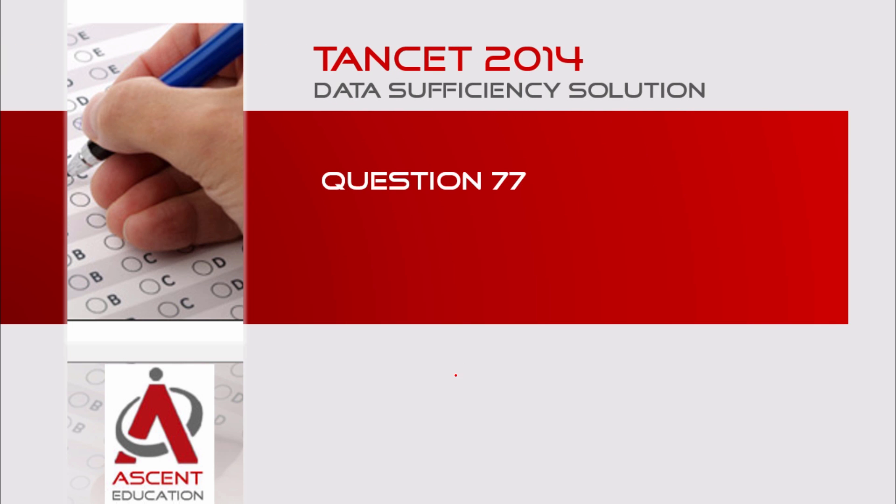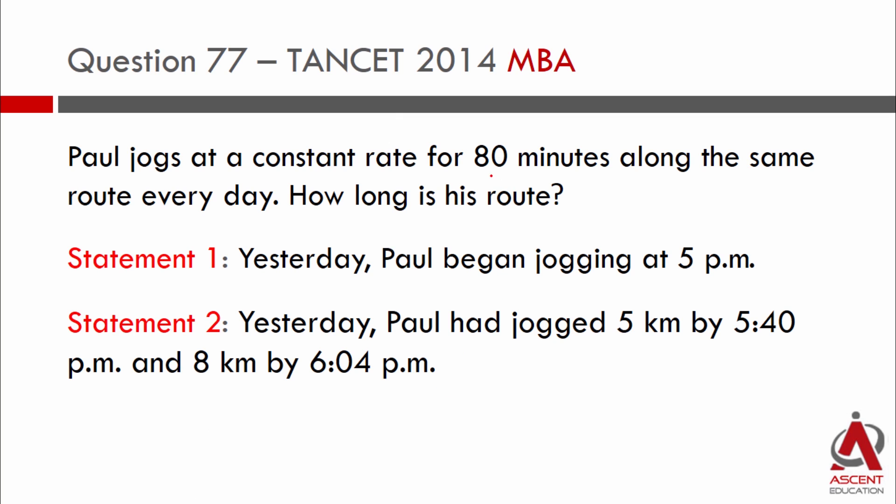This question appeared in Tancet 2014, 77th question. It's a very easy question in the topic of speed, distance, and time. Paul jogs at a constant rate for 80 minutes along the same route every day. How long is this route is the question.